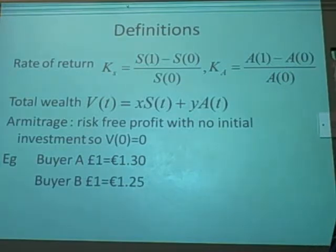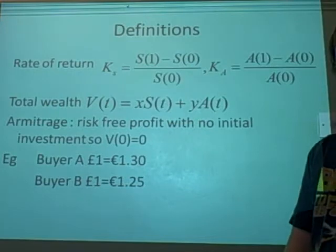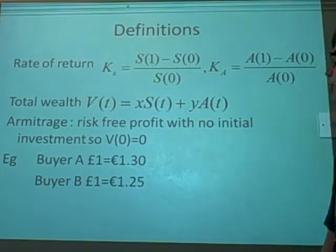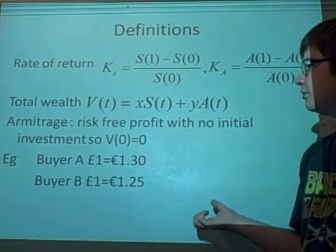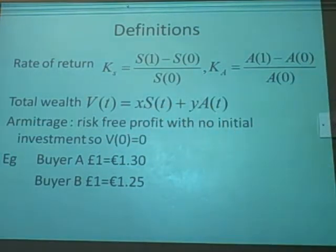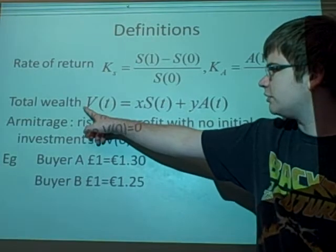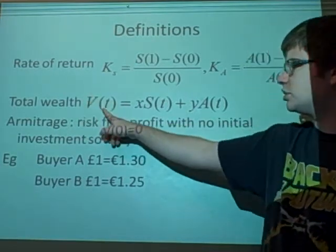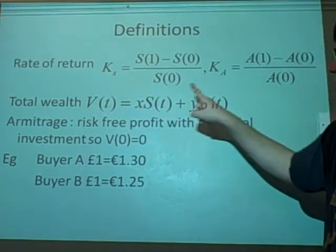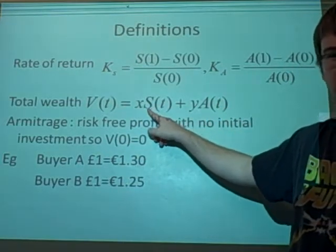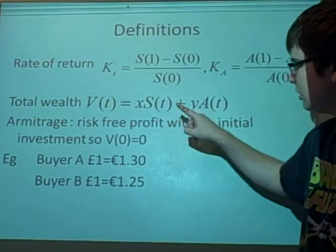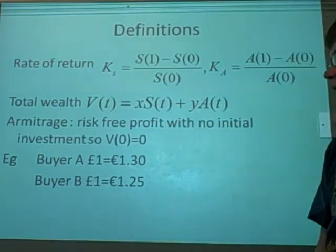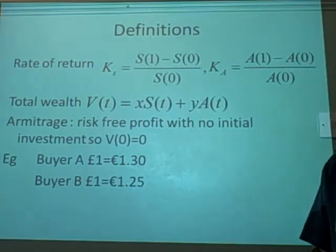Next thing is the total wealth. The two things we're going to take into account here are the stocks you might have and the bonds you might have. This is our total wealth, V(t). If this was 0, then you'd have S0 and A0, your stocks at the starting and your bonds at the starting. X is how many stocks you have, and Y is how many bonds you have. They can actually be negative because you could owe someone some stocks.